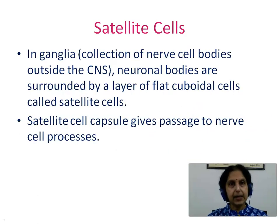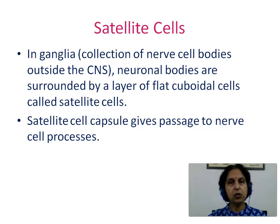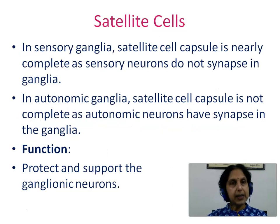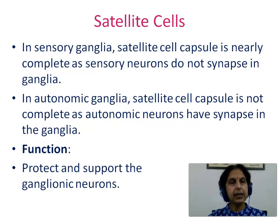Satellite cells are found in ganglia — collections of nerve cell bodies outside the central nervous system. The neuronal bodies are surrounded by a layer of flat perivascular cells called satellite cells. The satellite cell capsule gives passage to the nerve cell processes. In sensory ganglia, the capsule is nearly complete as sensory neurons do not synapse in the ganglia, whereas in autonomic ganglia the capsule is not complete as autonomic neurons do synapse there. Satellite cells protect and support the ganglionic neurons.